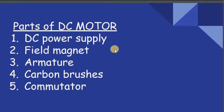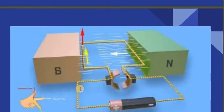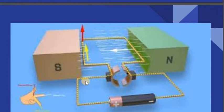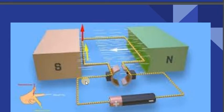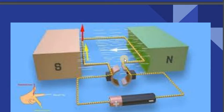These are the parts of the DC motor: DC power supply, field magnet, armature, carbon brushes, and commutator. This is the basic diagram of the electric motor — the power supply, the carbon brushes, the commutator, the current-carrying coil which we call the armature, and the field magnets.